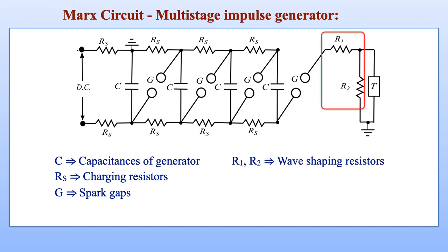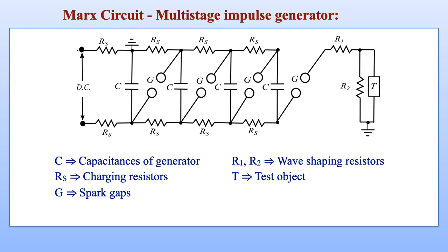Apart from this, there are resistances known as wave shaping resistors R1 and R2 connected across the output of the multi-stage impulse generator, and lastly the test object or the sample insulation which will be tested with the high voltage impulse. Initially the spark gaps, represented by capital G, have their spacing adjusted to a large value such that they will not conduct at the charging voltage of the capacitors connected across them.